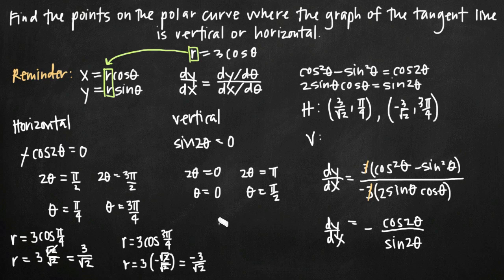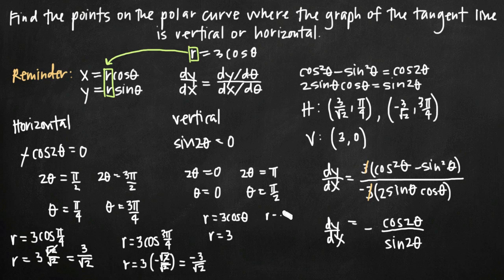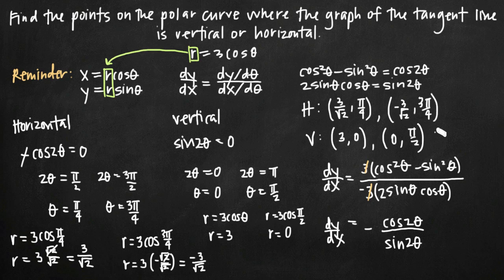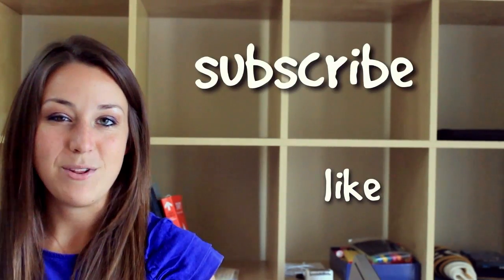For vertical tangent lines: plugging in theta equals 0 gives r equals 3 cosine(0) equals 3 times 1 equals 3, so the point is (3, 0). Plugging in theta equals pi/2 gives r equals 3 cosine(pi/2) equals 3 times 0 equals 0, giving the point (0, pi/2). Those are our four coordinate points — the first two for horizontal tangent lines and the second two for vertical tangent lines.